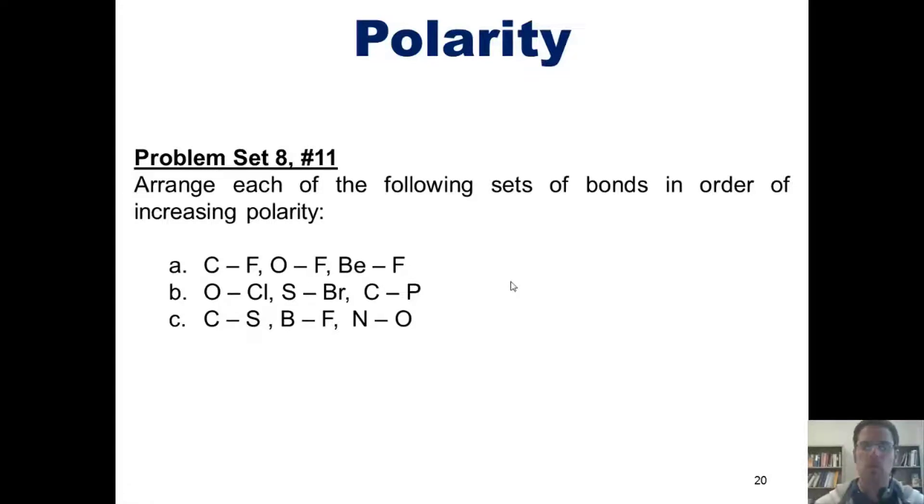the carbon-fluorine bond will be more polar than the oxygen-fluorine bond. So, once again, we have the least polar bond in this set being oxygen fluorine, followed by carbon fluorine, followed by the ionic bond, beryllium fluorine. I'll let you do parts B and C on your own.